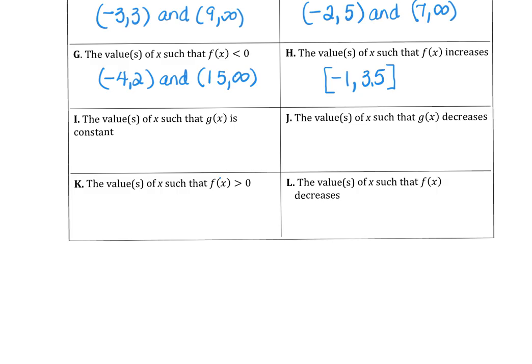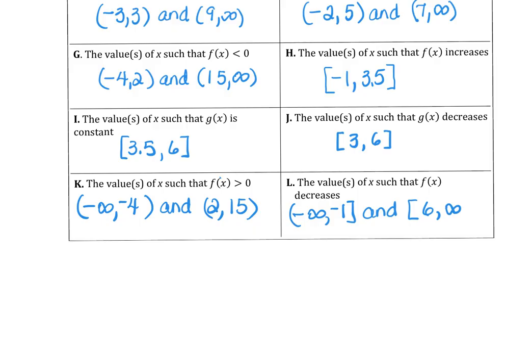On letter i, we want the values where f of x is constant. That's 3 and a half to 6. And again, I'm using closed intervals. The value of x, where g of x decreases, is from 3 to 6. And the values of x, where f of x is positive, is from negative infinity to negative 4. And then again, from 2 to 15. And then the last piece, the values of x, where f of x decreases. f of x is decreasing from negative infinity to negative 1. And it's also decreasing on 6 to infinity. I hope you did well on that example. See you for lesson 2.